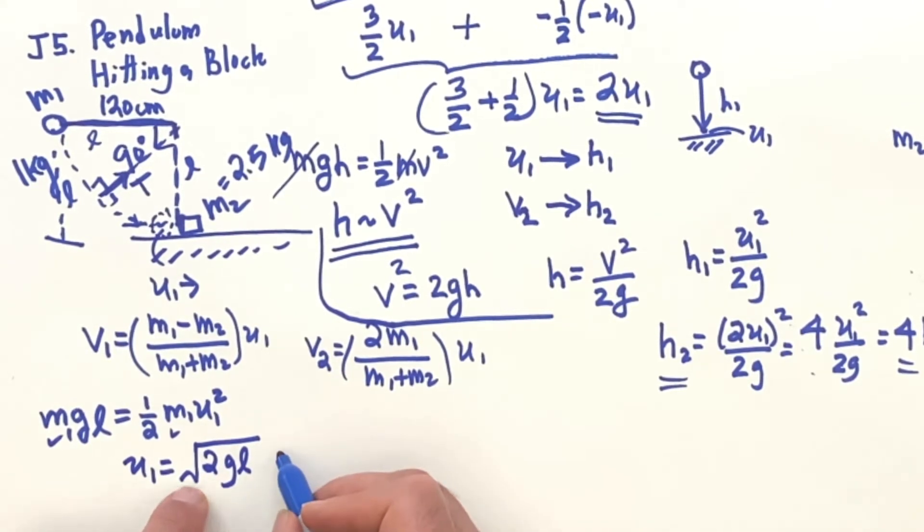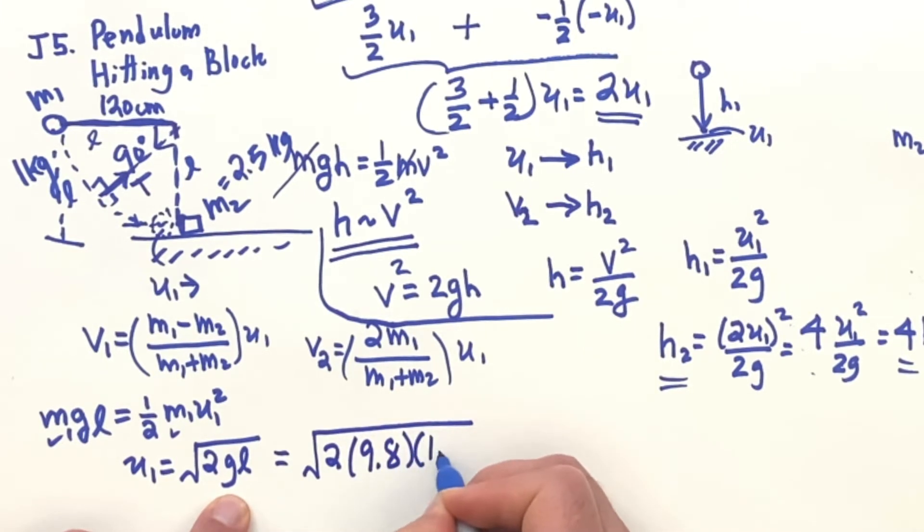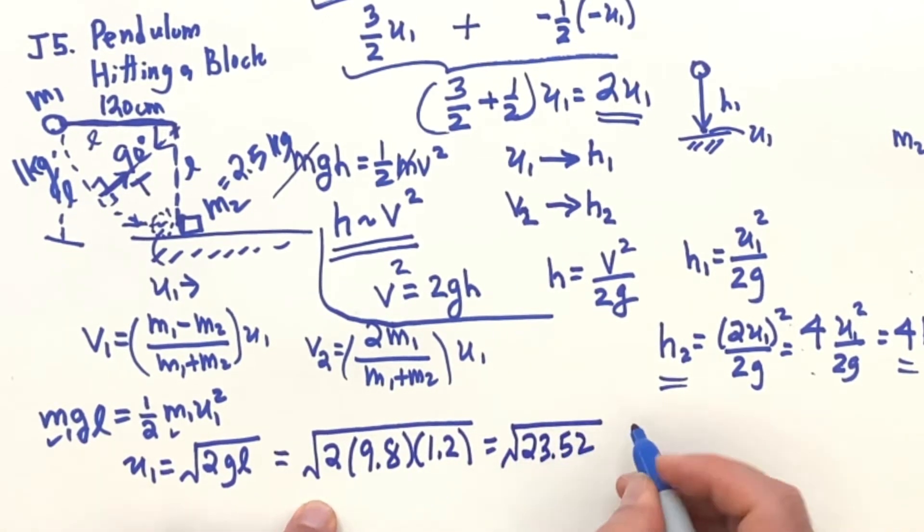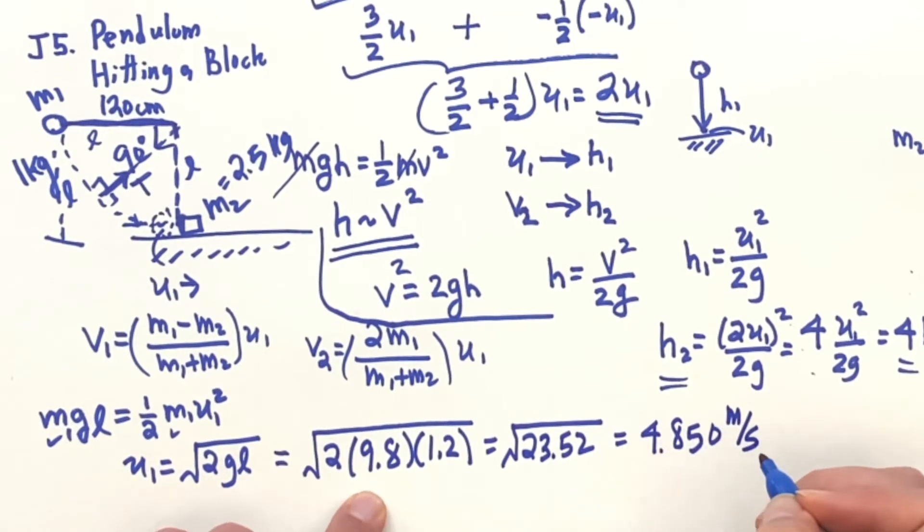So we can go ahead and figure out what that is. That's 2 times 9.8 times 1.2 meters. And with the calculator, you'll get 23.52, take the square root, you'll get 4.850 meters per second. I could round off at the end.